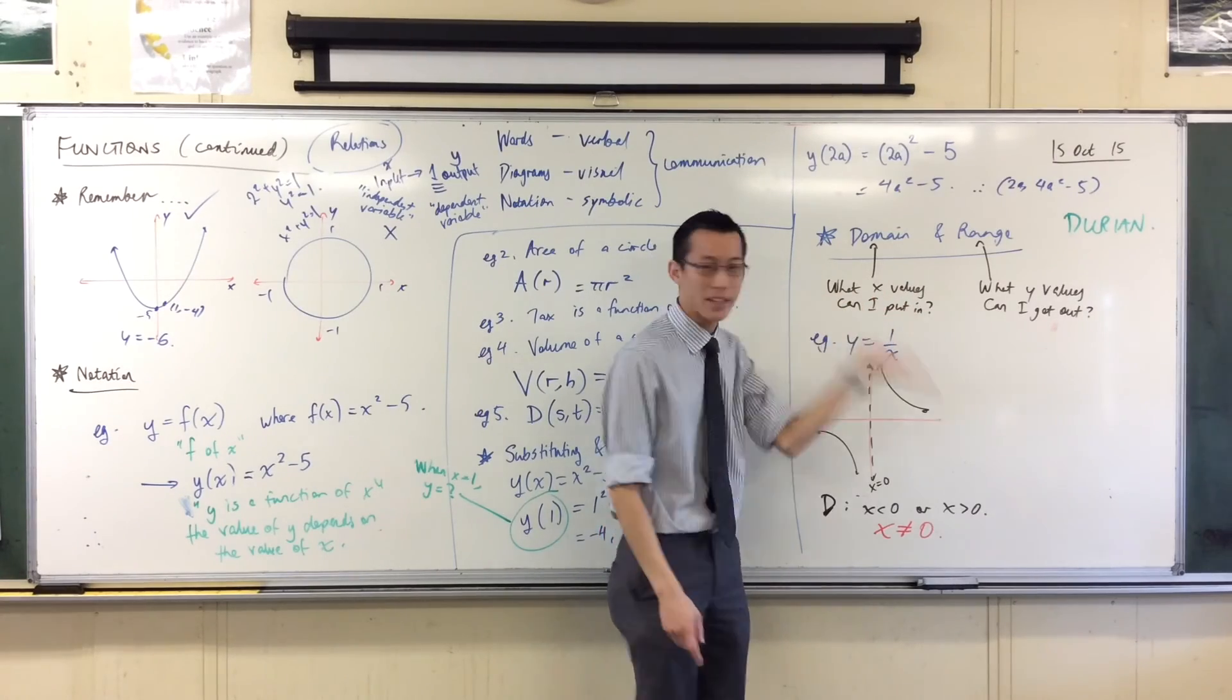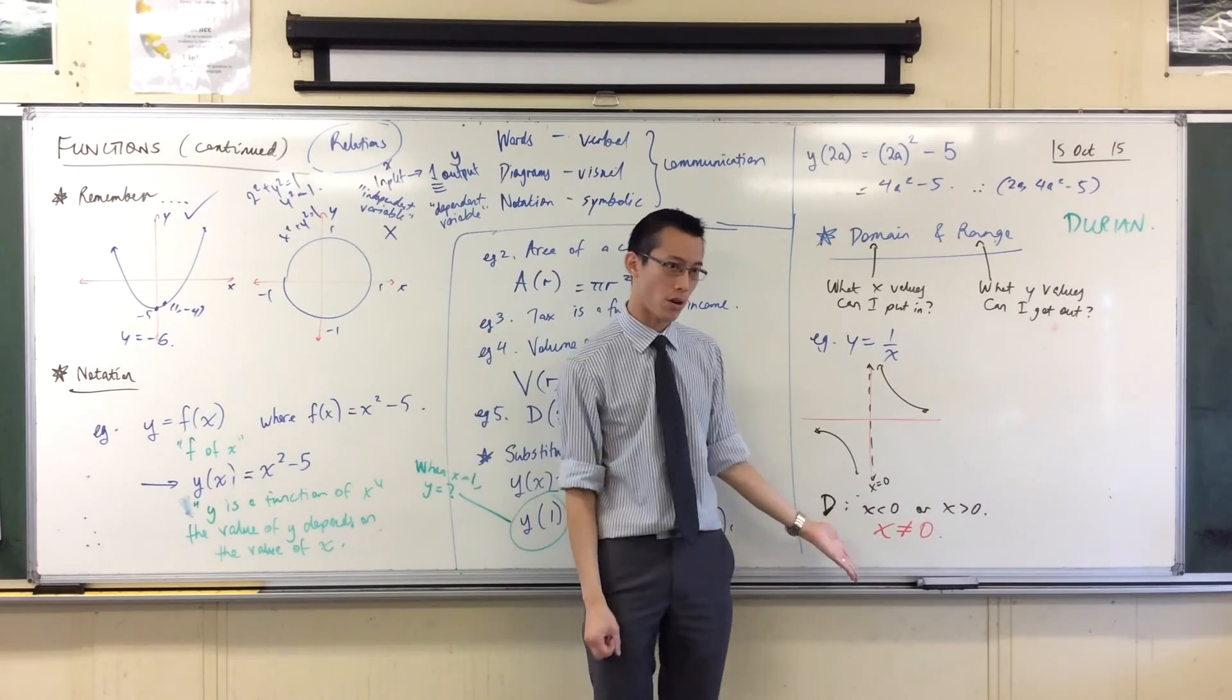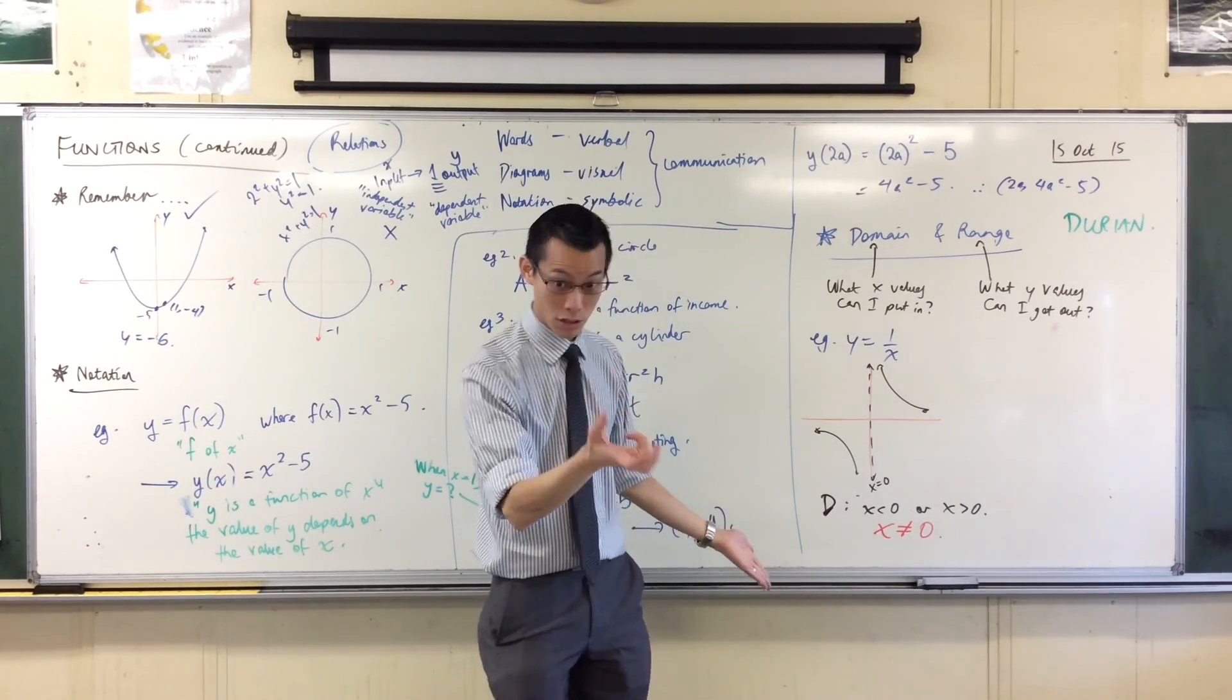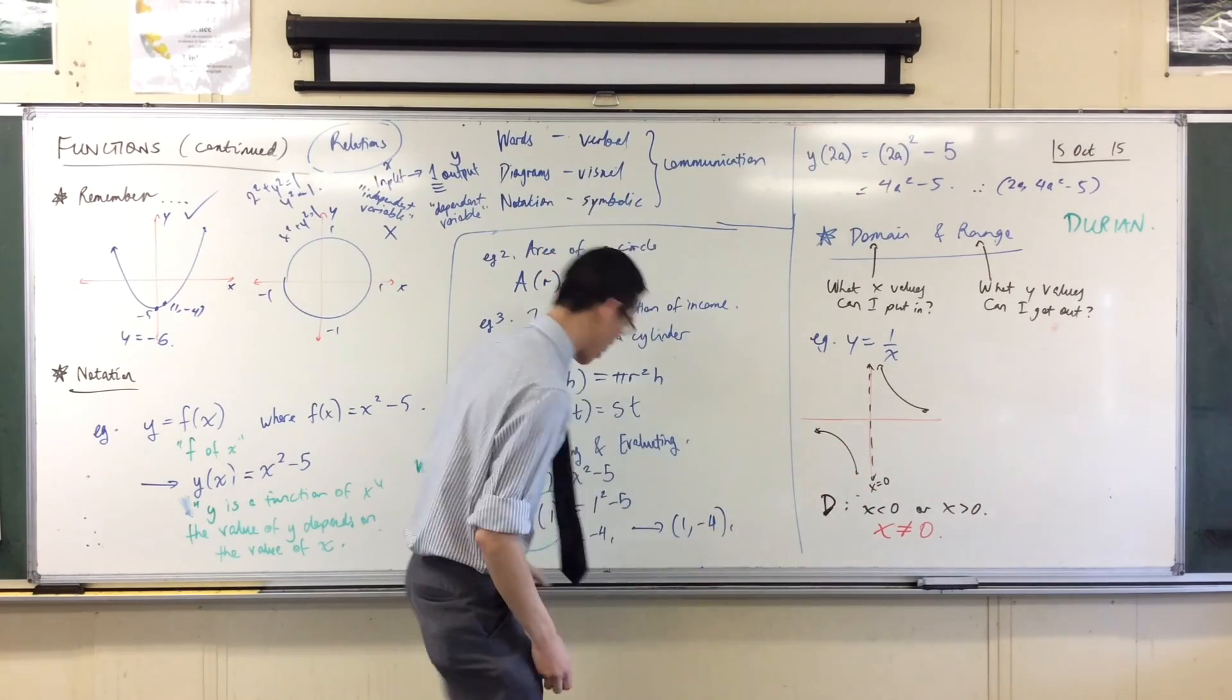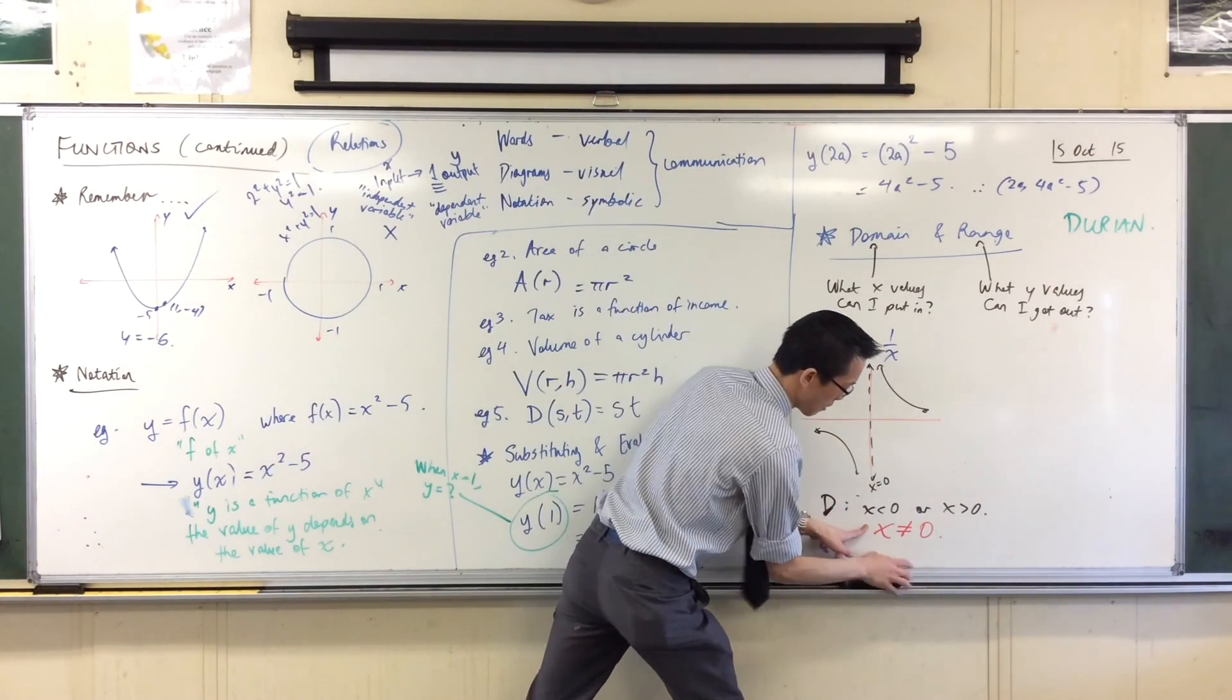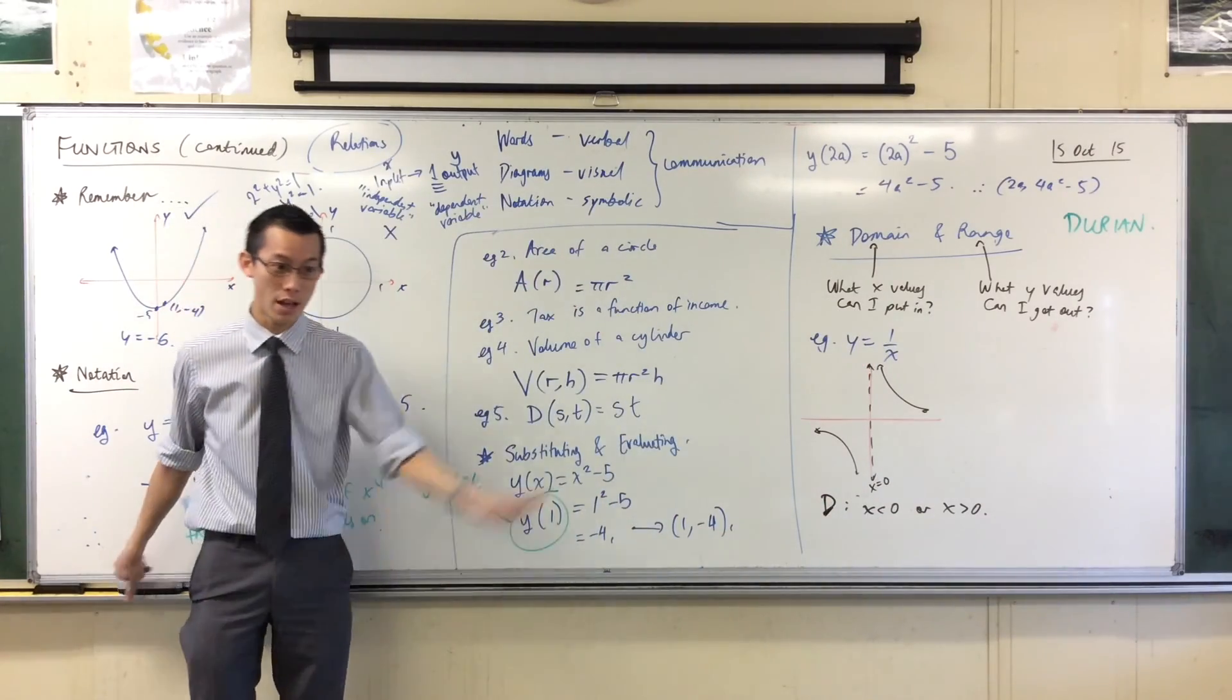Domain says what can I put in, what's going to work. And if you say X is not equal to zero, you are telling me the opposite thing - you're telling me what doesn't work. It's not the answer. So don't do that. I'm gonna rub that off so you don't see it. Answer it: X is less than zero or X is greater than zero. That's the way it's done.